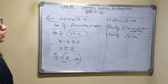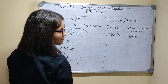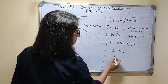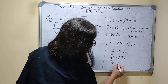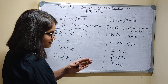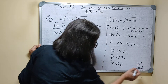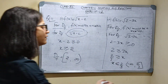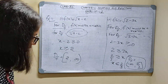Second part: f(x) is equal to root of 2 minus 3x. For domain of a function, f(x) must be a real number, so root of 2 minus 3x must be a real number. It means 2 minus 3x is always greater than or equal to 0. So 2 is greater than or equal to 3x, or x is less than or equal to 2 by 3. The domain goes to minus infinity. So domain of the function is (-infinity, 2/3].